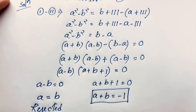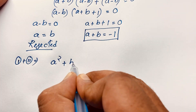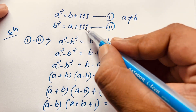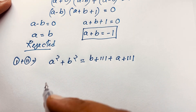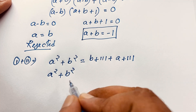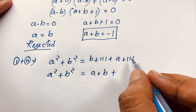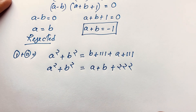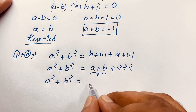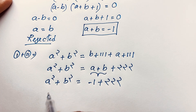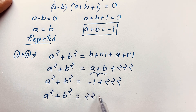Now I add both equations. First equation plus second equation gives a squared plus b squared equals b plus 111 plus a plus 111. That simplifies to a squared plus b squared equals a plus b plus 222. Since we found a plus b equals negative 1, substituting gives a squared plus b squared equals negative 1 plus 222, which equals 221.